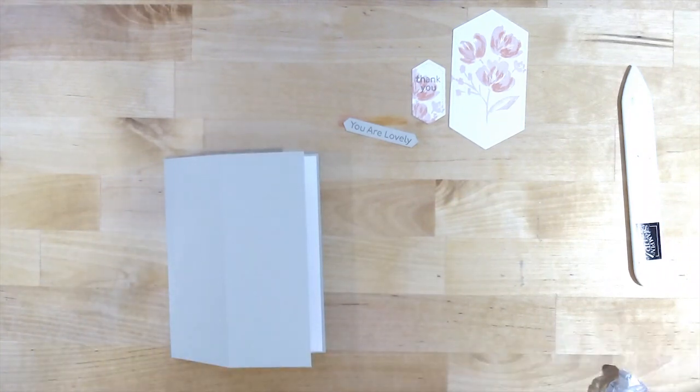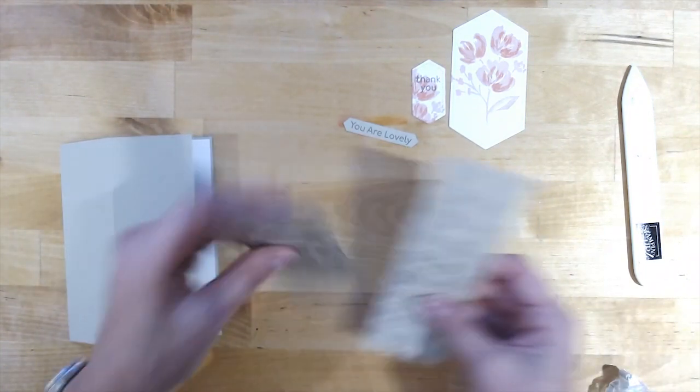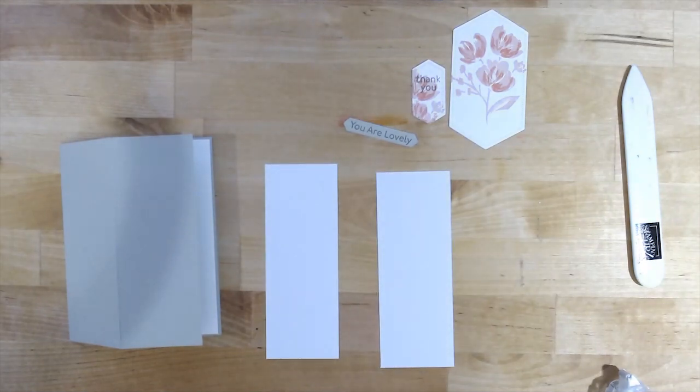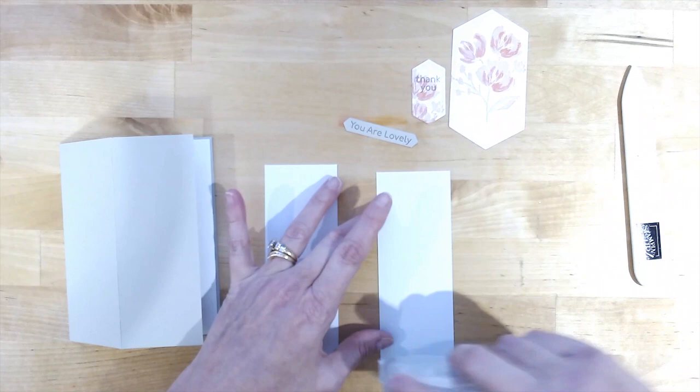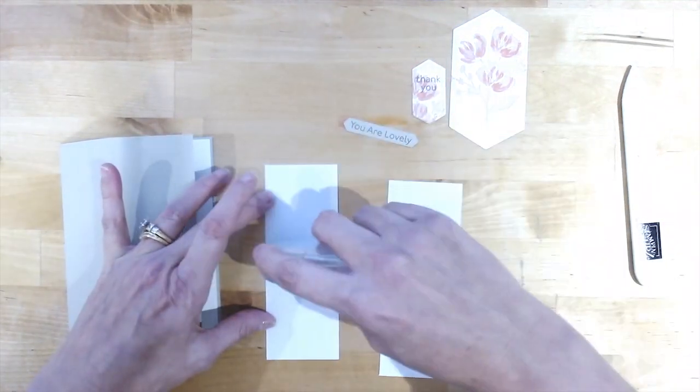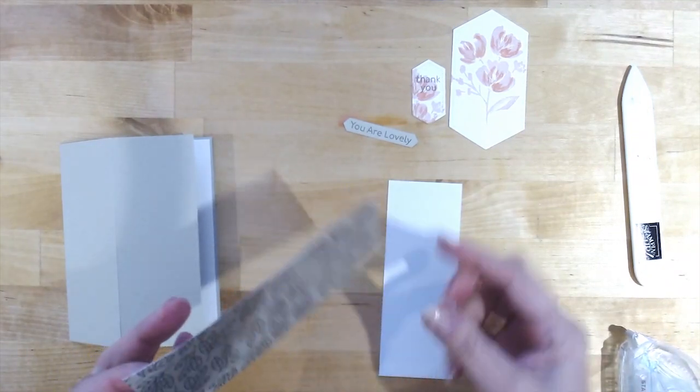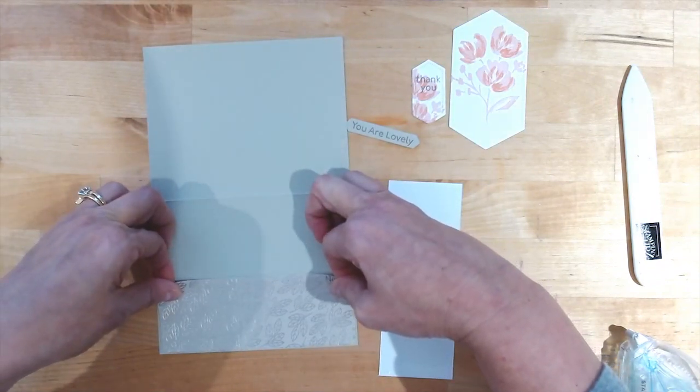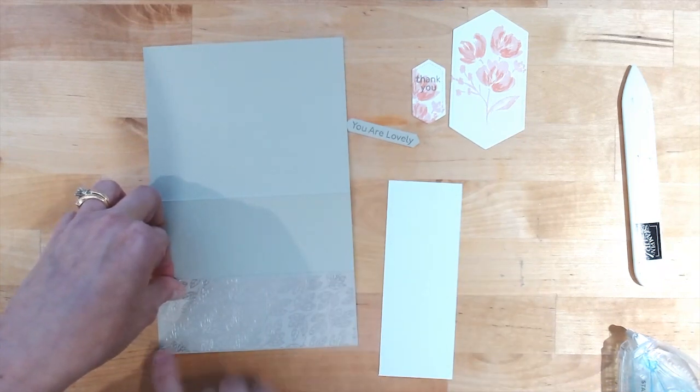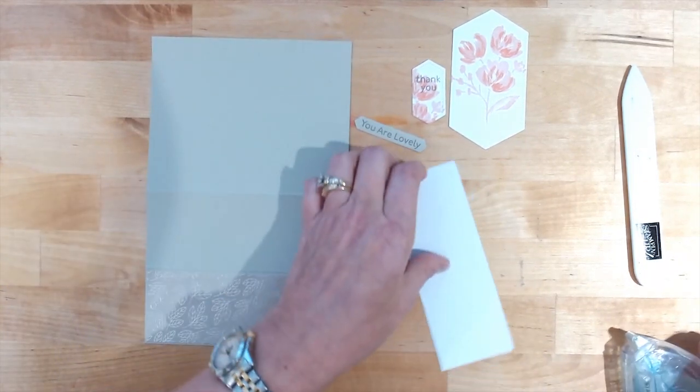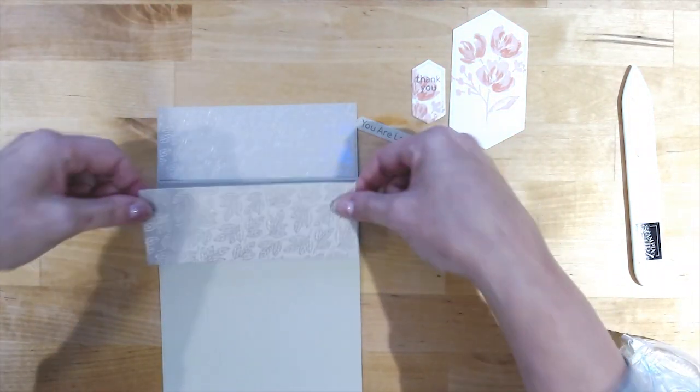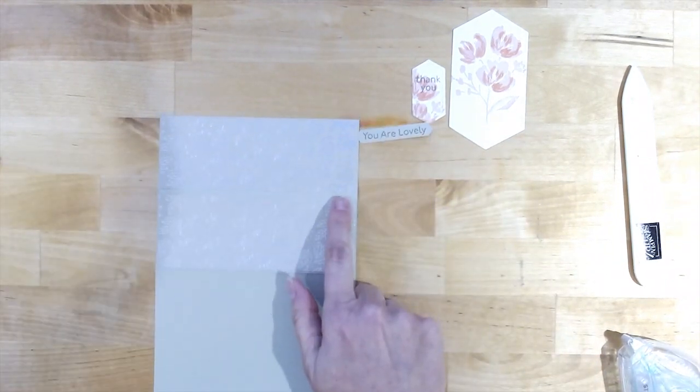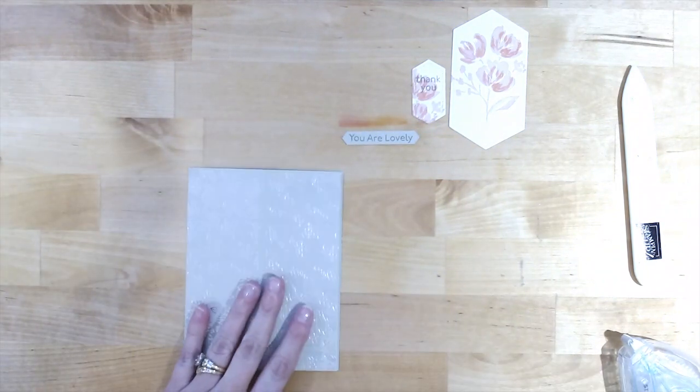So on the front of the card, I'm going to go ahead and adhere down my two designer paper strips. So I am just centering it left to right and trying to get about the same distance on this outside edge. I'm not worried about the fold line because I'm going to cover a lot of that anyway. And then I'm going to do the same thing on the opposite side of the front. So if you end up with a little bit of a wider gap here, it's really not a big deal.